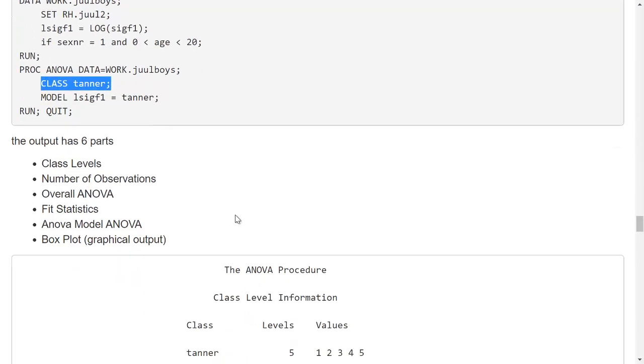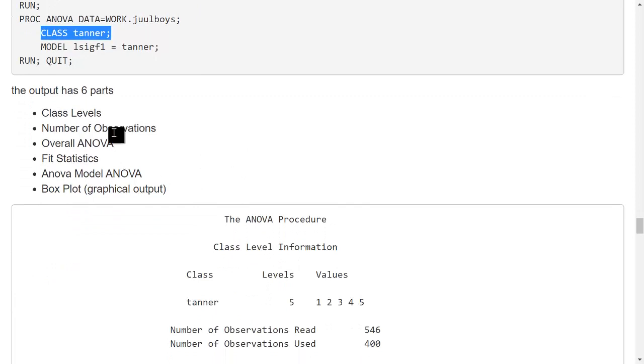When I run this program, the output has six different parts. The class levels, the number of observations, the overall ANOVA, the fit statistics, and something called the ANOVA model ANOVA, and then some box plots.